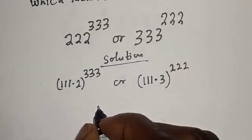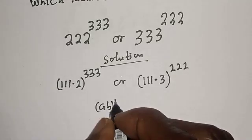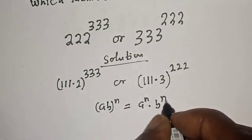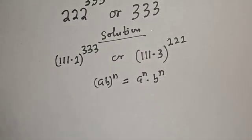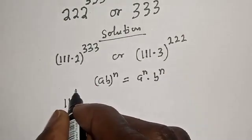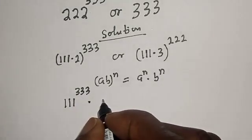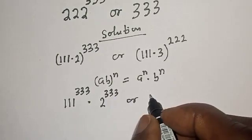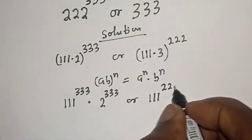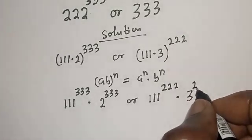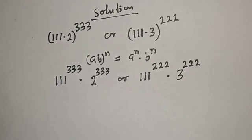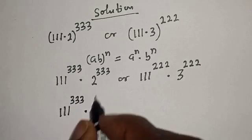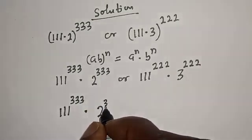Take note that if you have (a × b) raised to the power n, this equals a raised to the power n multiplied by b raised to the power n. So the first expression becomes 111 raised to the power 333 multiplied by 2 raised to the power 333. And the second becomes 111 raised to the power 222.